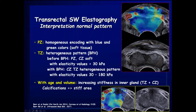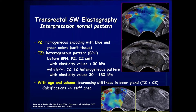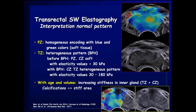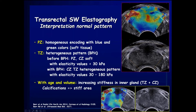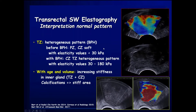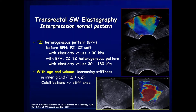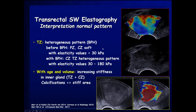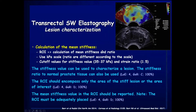With shear wave elastography, you do not press on the prostate — you simply observe the color map and can screen the entire prostate or analyze abnormal nodules. The peripheral zone typically appears with homogeneous blue and green colors in younger men. With BPH, a more heterogeneous pattern is seen, and microcalcifications appear as stiff areas. The peripheral zone's soft homogeneous appearance is color-coded in blue; the appropriate scale is around 70 kilopascals maximum.